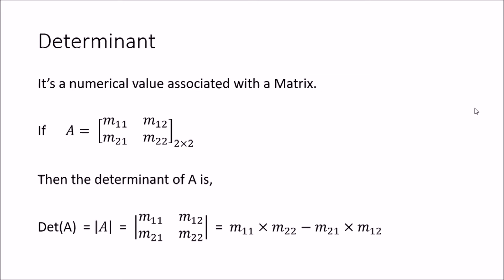First of all, let's look at this matrix A equals m11, m12, m21 and m22. If I am going to find the determinant of this one, this is referred to as det A, or you can have the absolute value mark with A written within it, or you can have the absolute value mark with the entire matrix written within it. These are three different ways of representing the determinant of matrix A. For a 2 by 2 matrix, the determinant is equal to the multiplication of the terms in the principal diagonal — that is m11 into m22 — minus the multiplication of the elements in the sub-diagonal — that is m21 and m12.